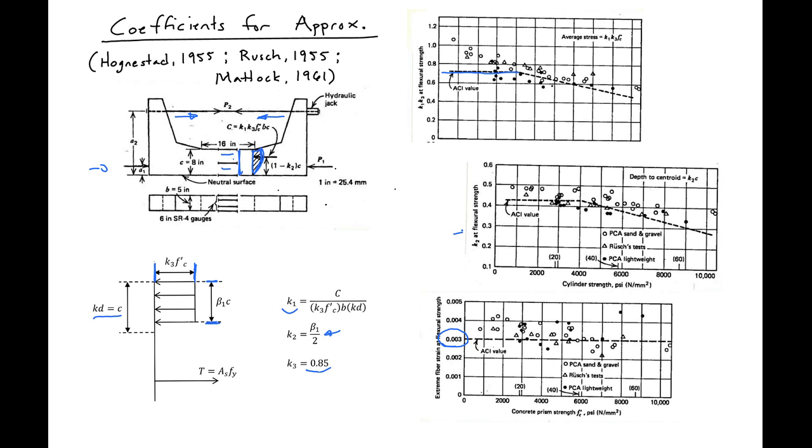So these are the values that we use in ACI and we'll use in future examples.